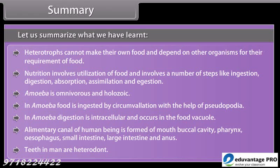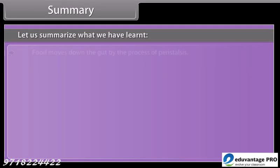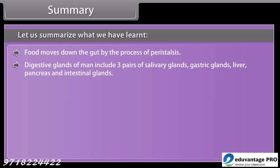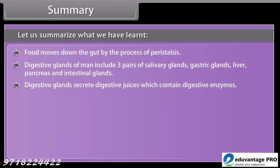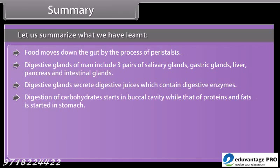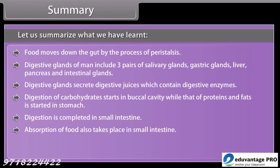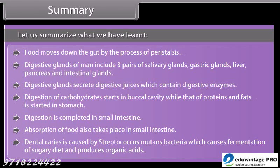Teeth in man are heterodont. Food moves down the gut by the process of peristalsis. Digestive glands of man include three pairs of salivary glands, gastric glands, liver, pancreas, and intestinal glands. Digestive glands secrete digestive juices which contain digestive enzymes. Digestion of carbohydrates starts in the buccal cavity, while that of proteins and fats is started in the stomach. Digestion is completed in the small intestine, where absorption of food also takes place. Dental caries is caused by Streptococcus mutans bacteria, which causes fermentation of sugary diet and produces organic acids.